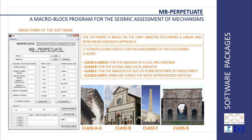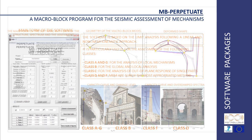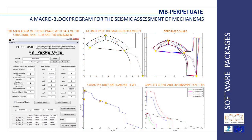Moreover, it is particularly useful for the analysis of local mechanisms that may occur in palaces and urban aggregates. According to the procedure developed in Perpetuate, starting from simple data on the geometry of the examined structure, it allows evaluation of the capacity curve, definition of the performance levels, and evaluation of the maximum return period compatible for the asset.